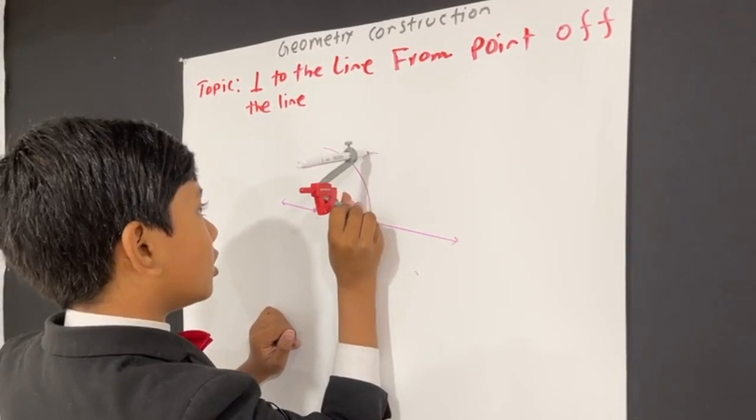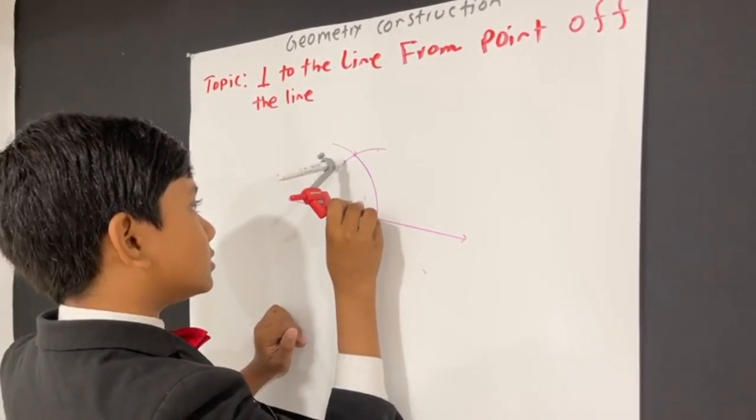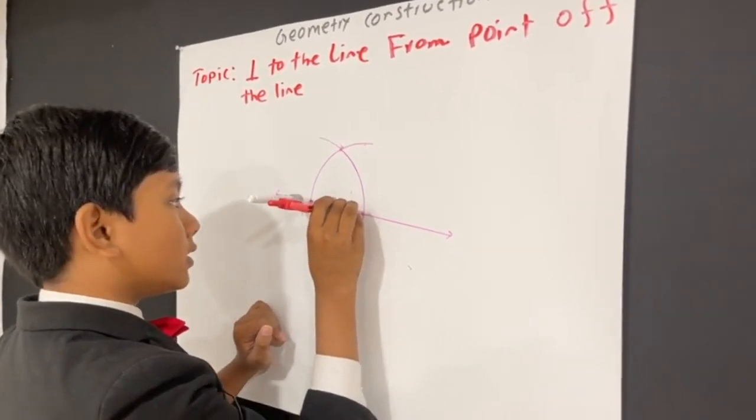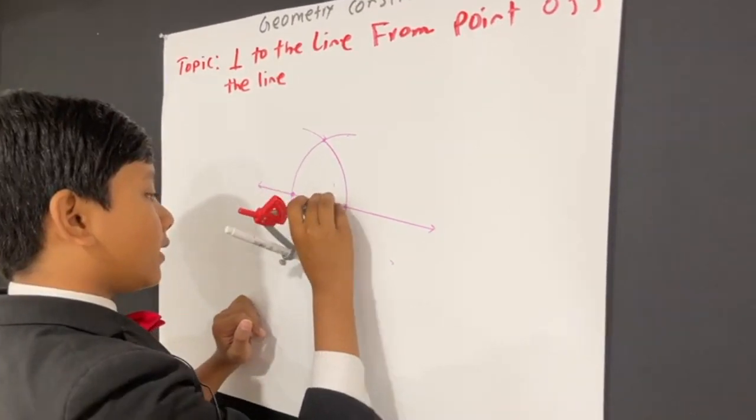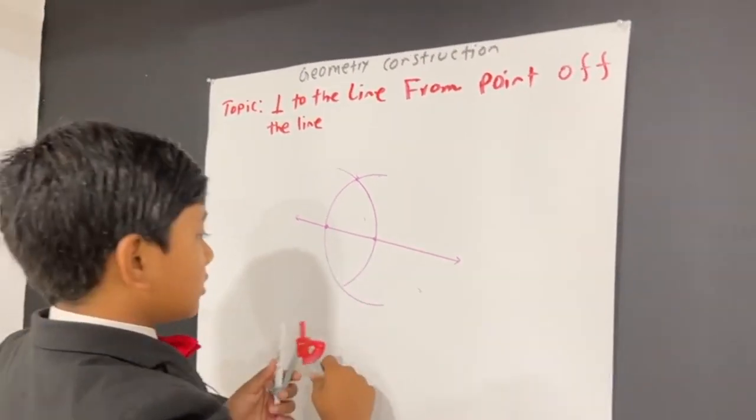So now, I'm going to draw a curve like this, so that it also intersects this point. So, bang, bang, yoink.